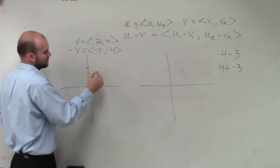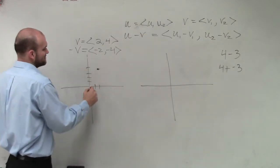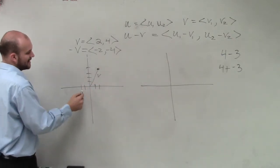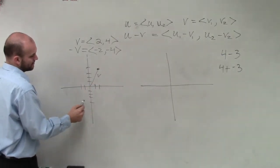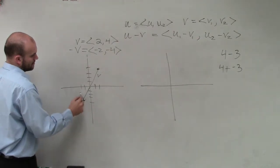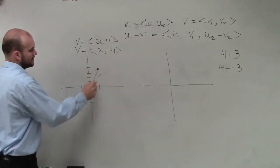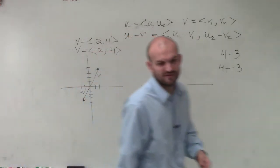But, so that's vector v. And then negative v is going to be negative 2, 1, 2, 3, 4. Does everybody follow me with that? V and then negative v.